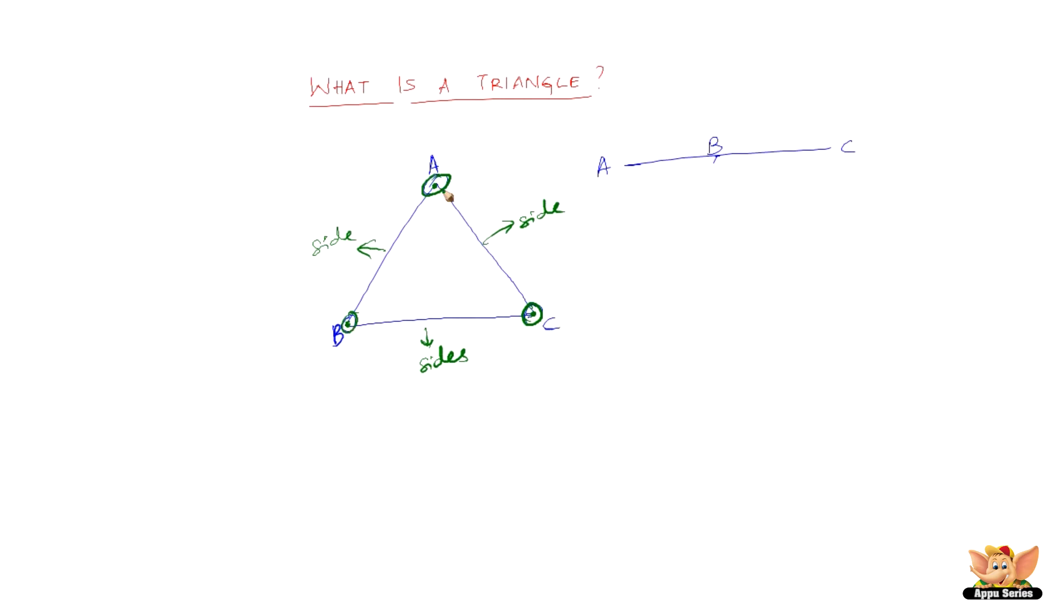And the angles BAC, ACB, and CBA are called the angles of a triangle.